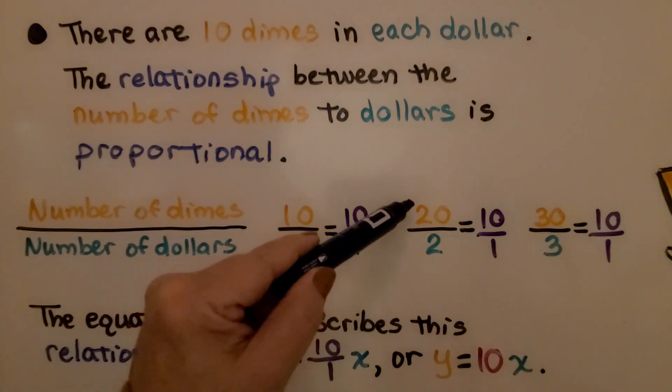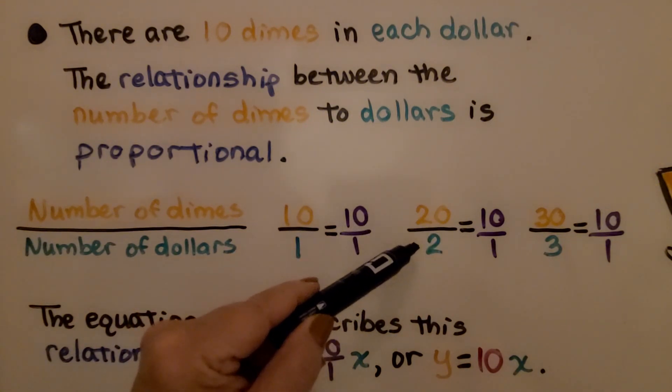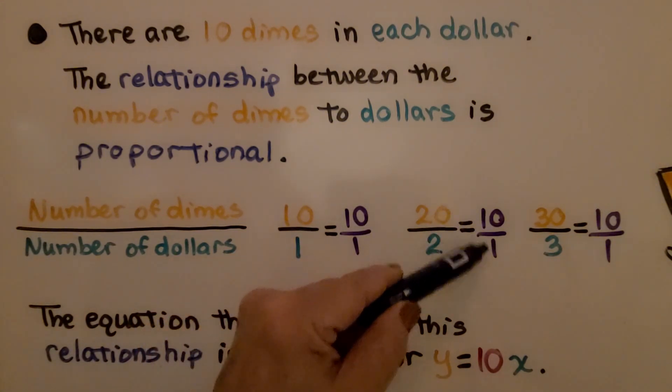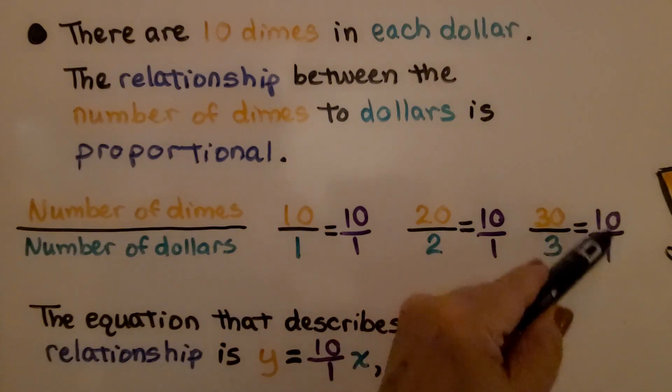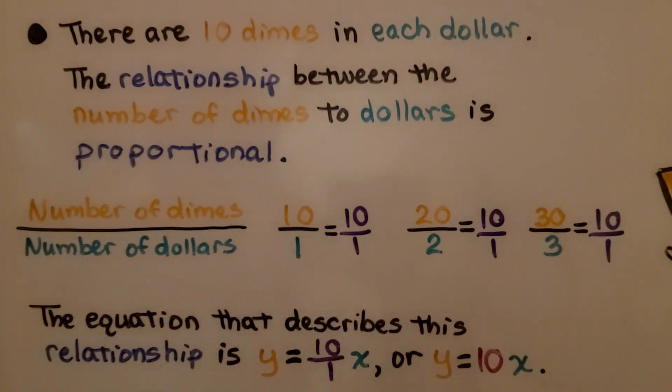Even if we have 20 dimes, that would be $2. When we put it in its simplest form, it's still 10 to 1. If we have 30 dimes, it will equal $3 and our ratio is still 10 to 1 in simplest form. The equation that describes this relationship is y equals the ratio 10 to 1, x, or y equals 10x.